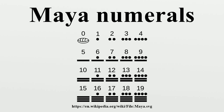Upon reaching 20² or 400, another row is started. The number 429 would be written as one dot above one dot above four dots and a bar, or 400 plus 20 plus 9 equals 429. The powers of 20 are used for numerals, just as the Hindu-Arabic numeral system uses powers of tens.